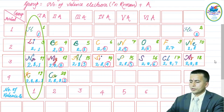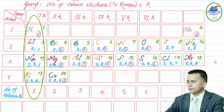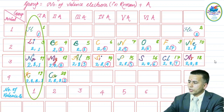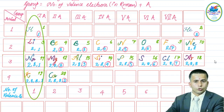Fluorine and chlorine both have seven electrons in their valence shell. Seven in Roman numerals is VII, and adding capital A gives Group VIIA. That is how the group number for fluorine and chlorine is assigned.